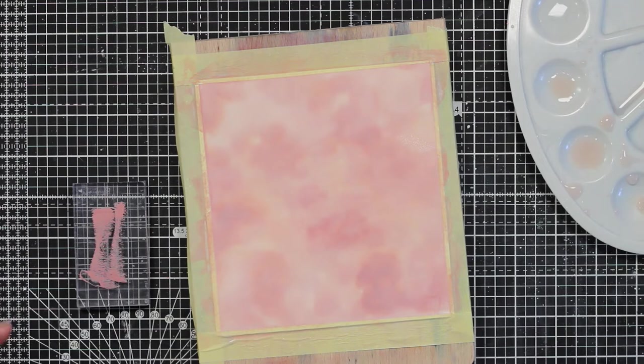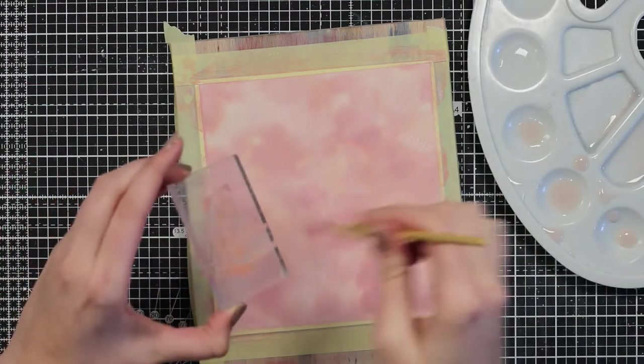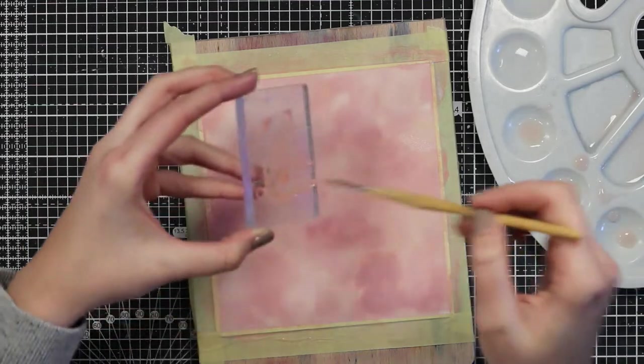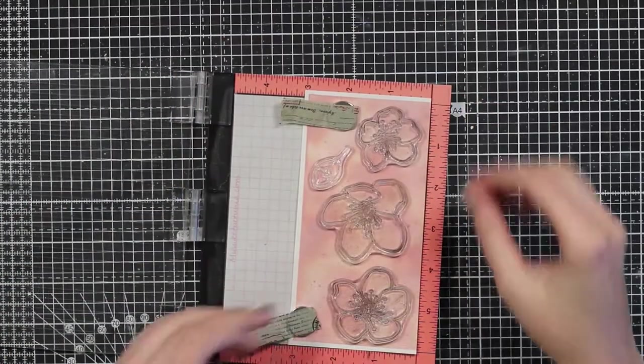To add some more details here in the background, I will use the dark Distress Oxide and make some splatters. This will just help to bring our eye to the focal point.